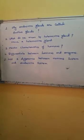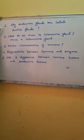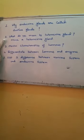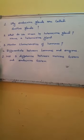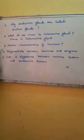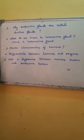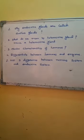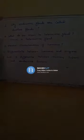These are your assignment questions. First: why are endocrine glands called ductless glands? Second: what do you mean by a heterocrine gland? Name an example. Third: mention the characteristics of hormones. Fourth: differentiate between hormones and enzymes in two columns. Fifth: list three differences between the nervous system and the endocrine system. You will get all the answers in the video itself, so first watch the video carefully and then write down the answers. Thank you.